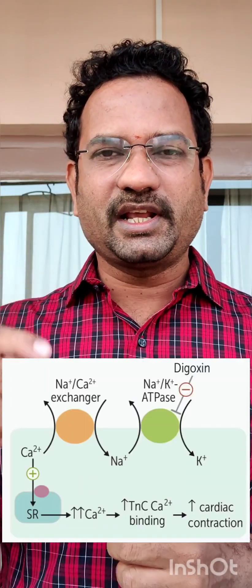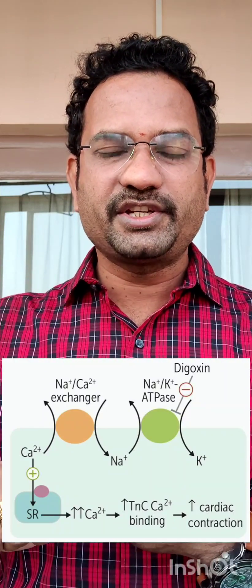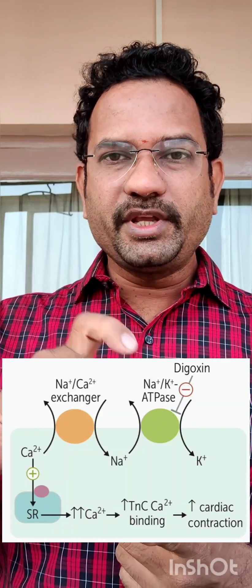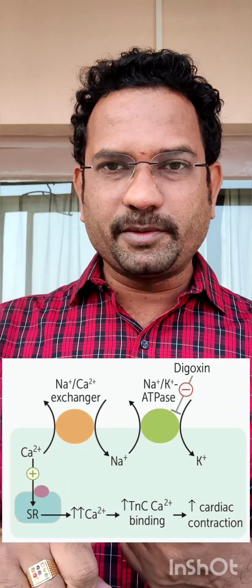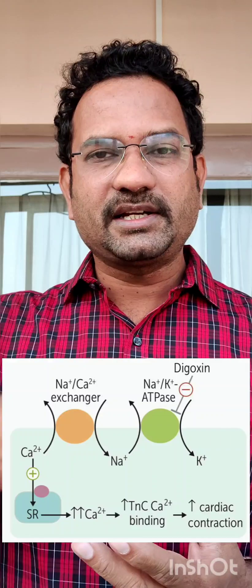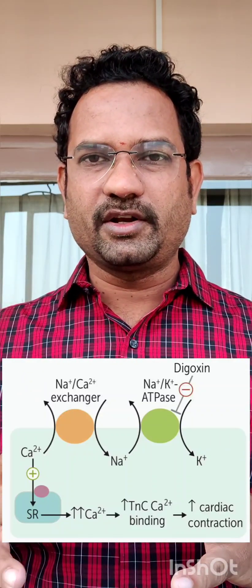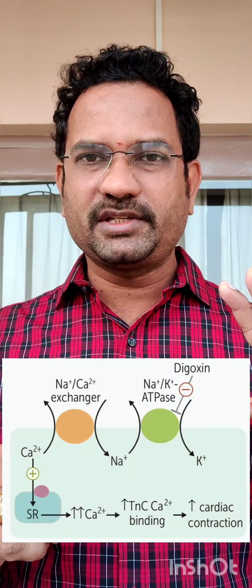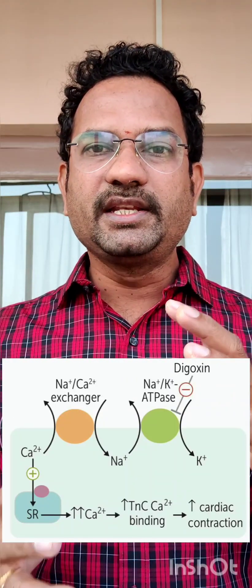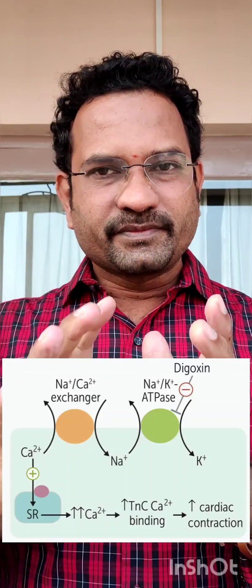Digitalis glycoside inhibits the cardiac sodium-potassium pump. When the sodium-potassium pump is inhibited, the sodium-calcium exchanger is also inhibited. Because of this, calcium levels inside the heart increase. The increased calcium is stored in the sarcoplasmic reticulum, so whenever there is a depolarization signal, excess calcium is released, causing increased myocardial contraction.